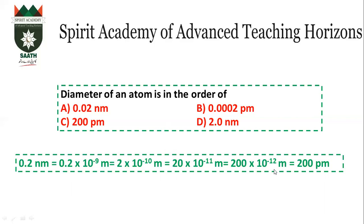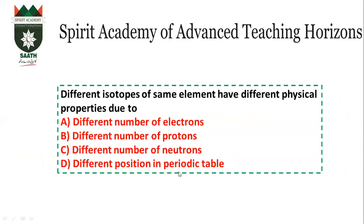When a value is 10 raised to minus 12, it becomes a picometer, so the answer becomes 200 picometers. Different isotopes of the same element have different physical properties because their masses are different — their neutron numbers are different. So this is the answer.